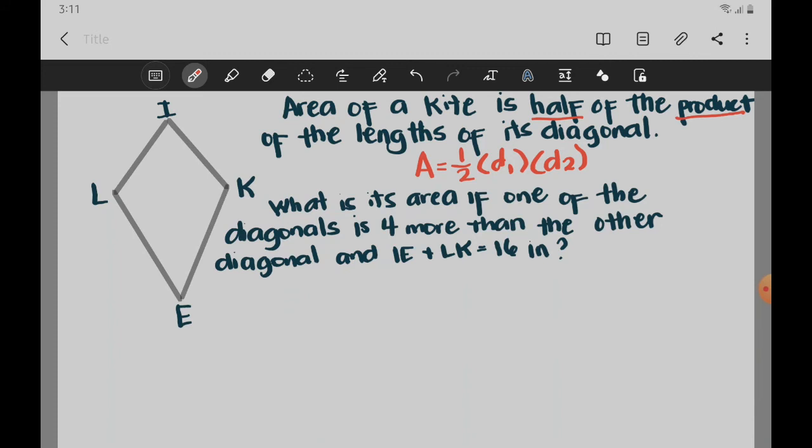So we are going to use this formula to be able to answer the last problem. What is its area if one of the diagonals is 4 more than the other diagonal and IE plus LK is equal to 16 inches? Let us write down first all the given values here in the problem. So obviously we have the given IE plus LK is equal to 16 inches.